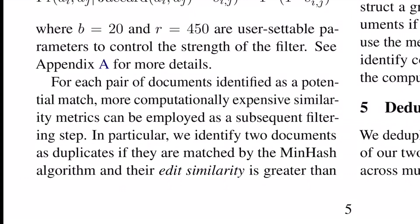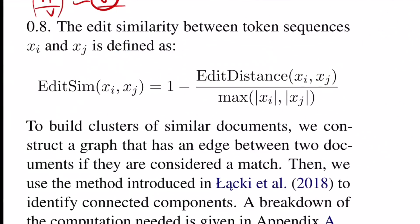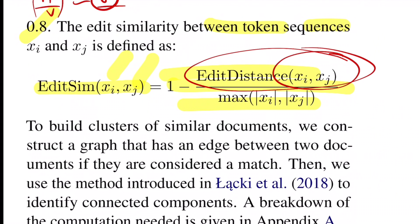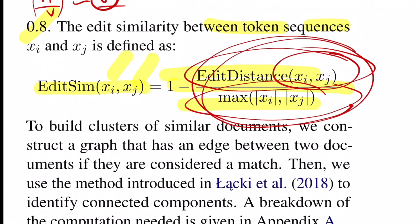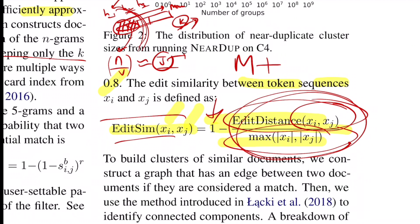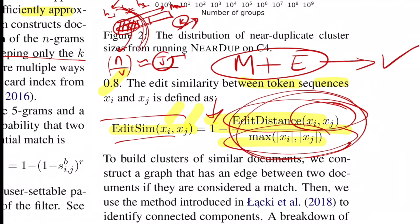Since this is an approximate similarity, the authors add a subsequent filter step that also compares edit distance post the minhash step. If the edit distance similarity between two documents xi and xj is greater than or equal to 0.8 at the token level, then the two documents are said to be similar. You calculate the edit distance — considering token substitutions, replacements, etc. — normalize it, and subtract from one to get the similarity. Both filters — minhash and edit distance — must be satisfied for a candidate to qualify as a duplicate.